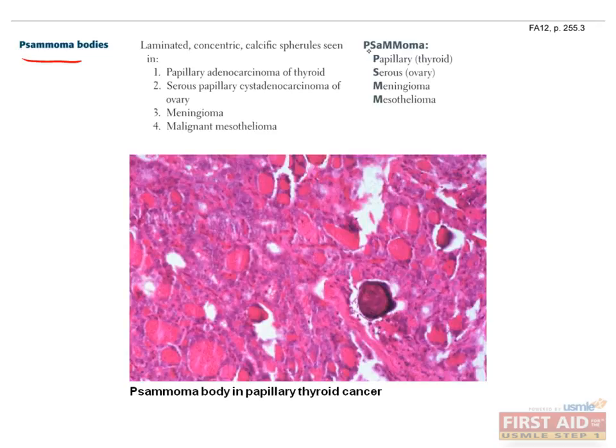You can remember this with the PSMM mnemonic that's listed here. The way this might come up on your exam is a question that describes some symptoms, shows you a picture of a psammoma body, and asks you to choose the illness. For example, if they describe what you think is a brain tumor and they show you a picture of a psammoma body, the answer has to be meningioma, since that's the only tumor that occurs in the brain that's associated with psammoma bodies.